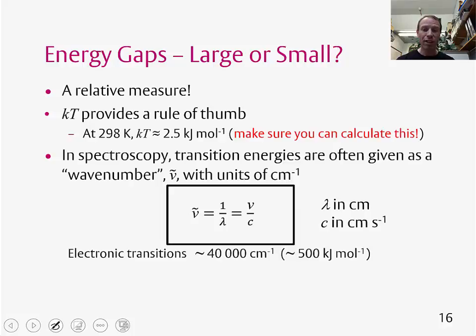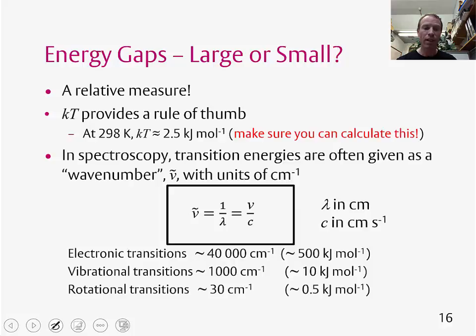If we look at various transitions, if you think about a gap between energy levels, electronic energy levels. This is about 40,000 centimeters to the minus one or 500 kilojoules per mole. Vibrational transitions around 1000 centimeters to the minus one or 10 kilojoules per mole. And rotational transitions are around 30 centimeters to the minus one or 0.5 kilojoules per mole.